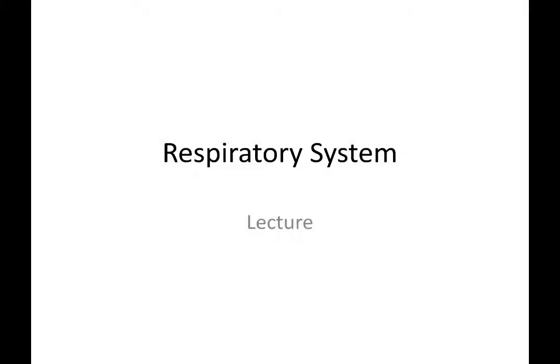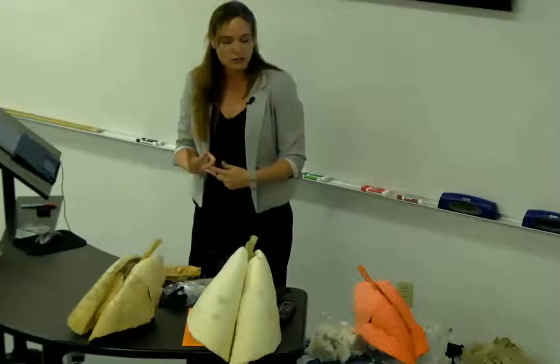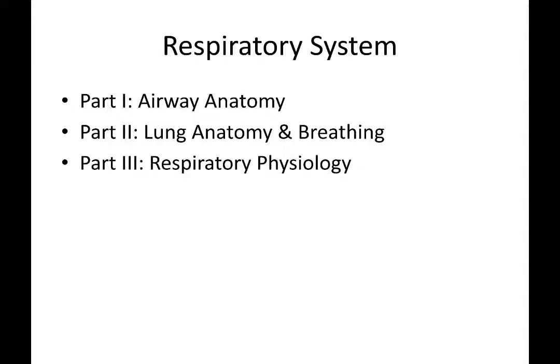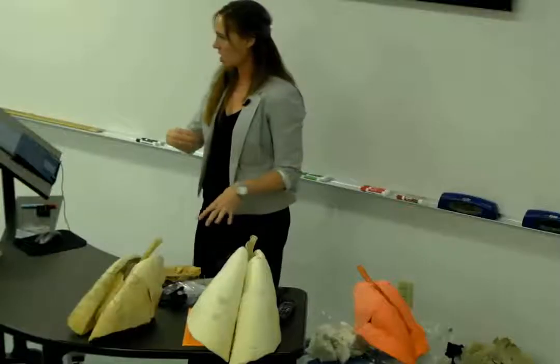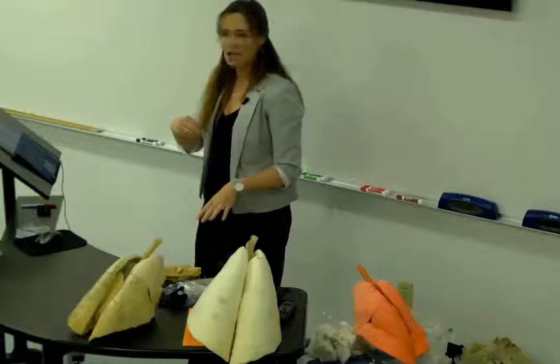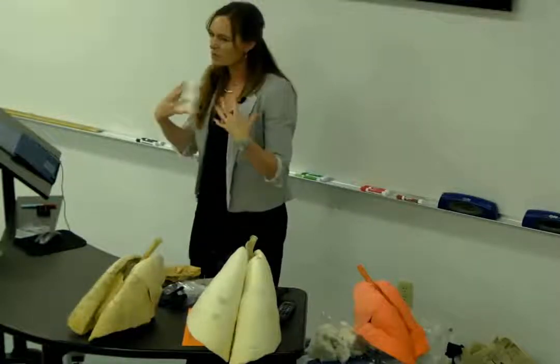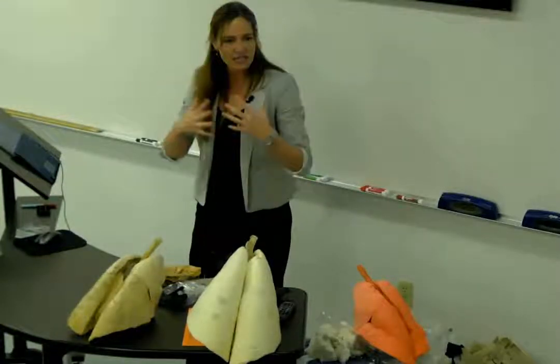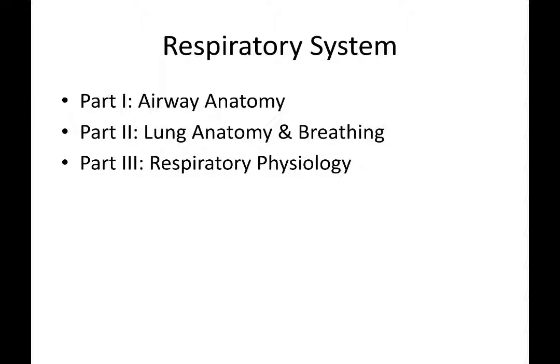Welcome to the respiratory system. It's going to be three parts. We're going to try to get through part one and two, which is the airway — just your basic anatomy of how to get air down to the alveolus — and then how we breathe: the mechanics of getting air in and out, the basic structures and volumes. Our next class session will be more about the physiology and the exchange of oxygen.